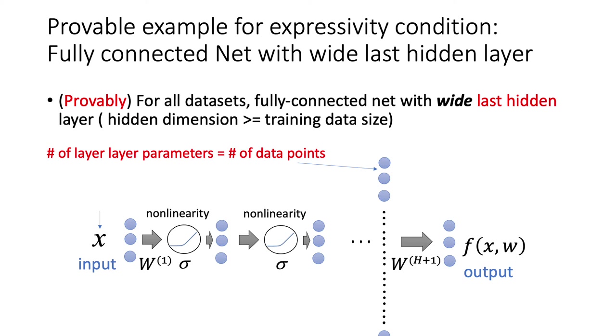a fully connected net with a wide last hidden layer satisfies expressivity condition if the hidden layer dimension is bigger than or equal to the training data set size. As shown in our example, we need all the other hidden layers to be as wide as the input dimension, but we need the last hidden layer to be as wide as the training data set dimension.